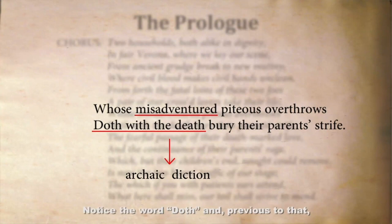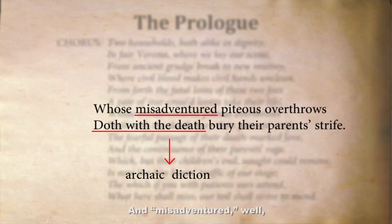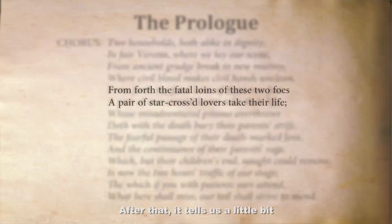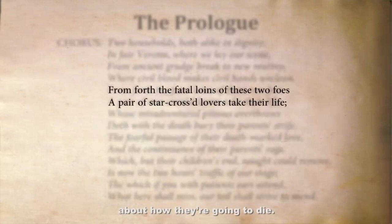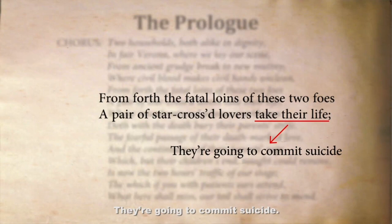Notice the word 'doth' and previously 'misadventured' — this is called archaic diction. Archaic diction is the use of words that we no longer use anymore. 'Doth,' for example, means does or do, and 'misadventured' means bad things happen to them. After that, it tells us explicitly that they will take their life — they're going to commit suicide. On the first page, we already know the tragic ending.